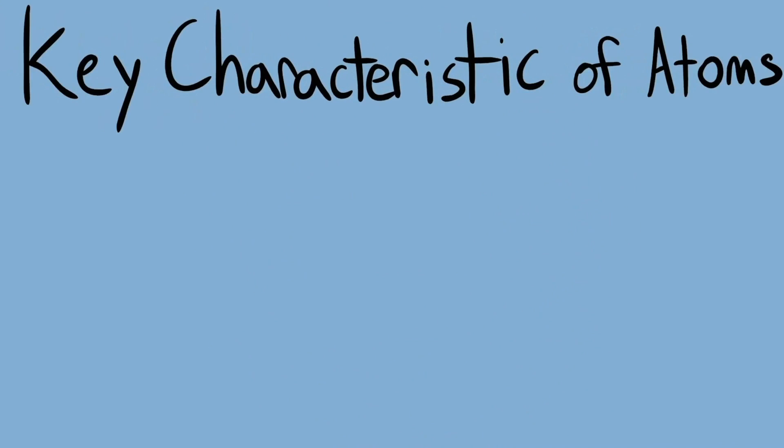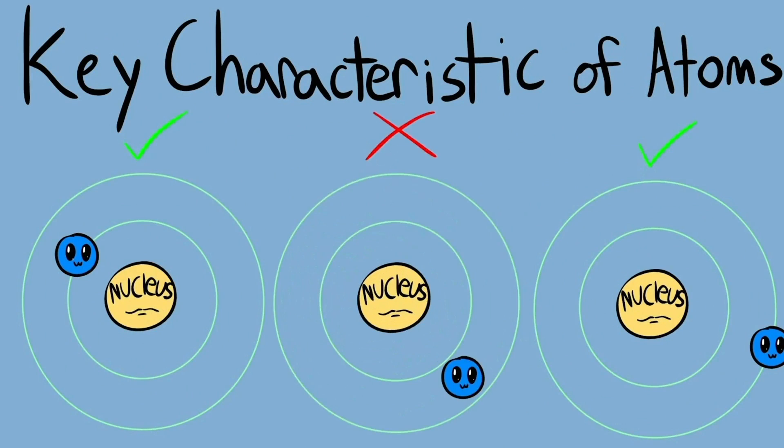Now, a key characteristic of atoms is that their electrons exist in these fixed orbitals around the nucleus. So an electron can be here or here, but not anywhere in between. They simply can't exist there. This has to do with the quantum nature of physics.